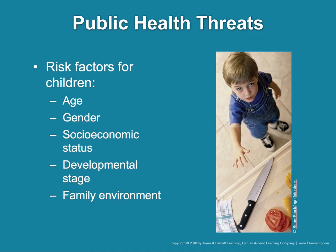Risk factors for injuries in children include age, gender, socioeconomic status, developmental stages, and family environment. Obviously, very young children can't protect themselves. People in poverty are at much higher risk of certain injuries or illnesses. A stronger family environment means less risk — for example, a single mother with six kids has higher risk for those children to be injured simply because she can't watch them all the time. Or if parents have a drug or alcohol issue, those kids are at higher risk for injury.